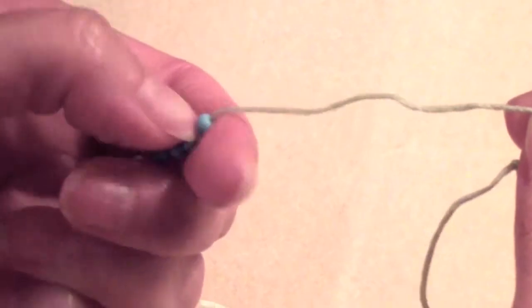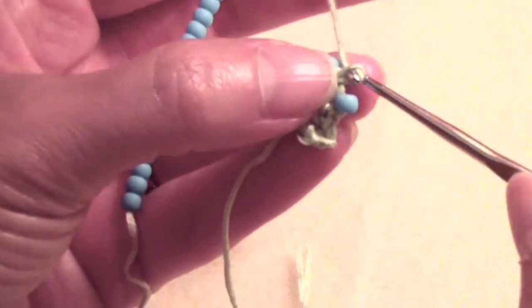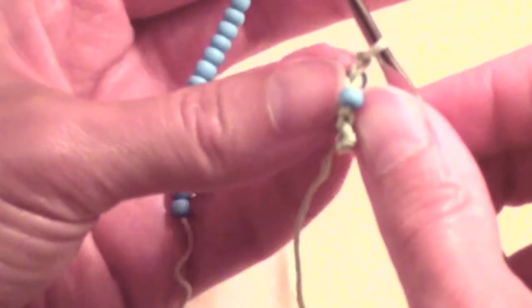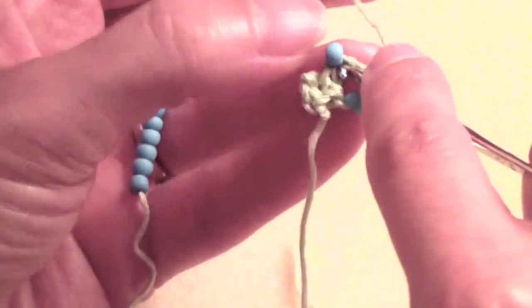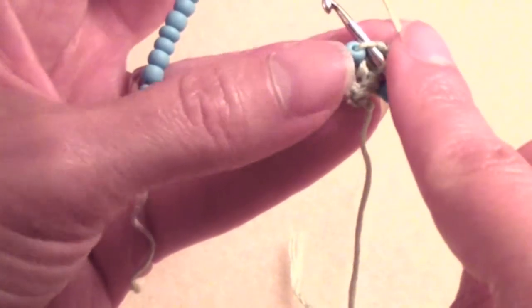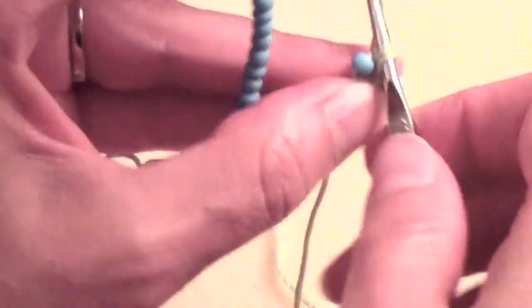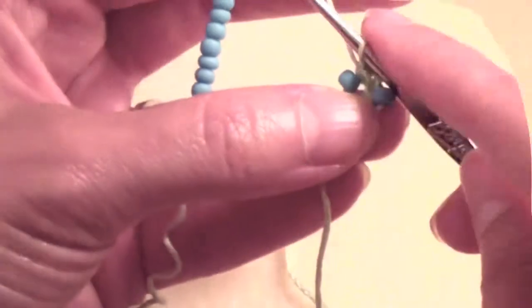You're going to slide down a bead and slip stitch over that bead. Again flip it over, insert your hook into the thread holding the bead, pull up a loop, finish off that single crochet stitch.